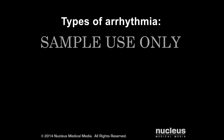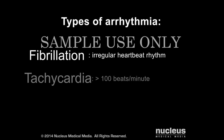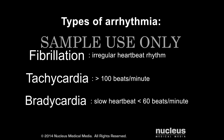Types of arrhythmias include fibrillation, which is an irregular heartbeat rhythm; tachycardia, which is a fast heartbeat of more than 100 beats per minute; and bradycardia, which is a slow heartbeat of less than 60 beats per minute.